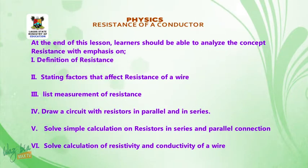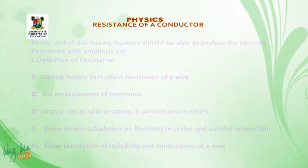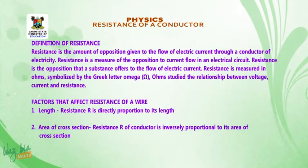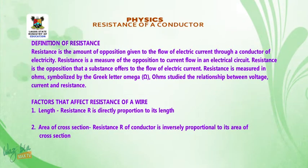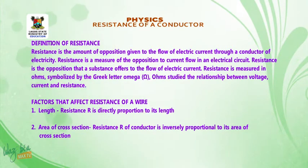6. Solve calculations of resistivity and conductivity of a wire. The contents: Definition of resistance. Resistance is the amount of opposition given to the flow of electrical current through a conductor of electricity. Resistance is a measure of the opposition to the current flow in an electric circuit.